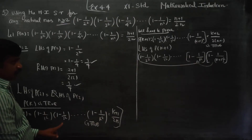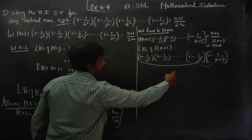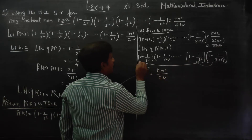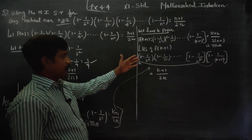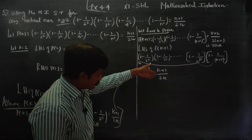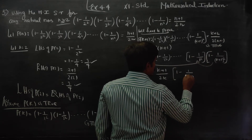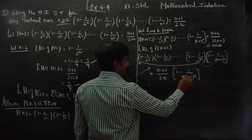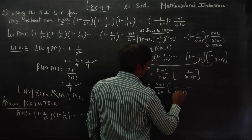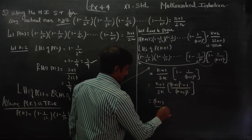We take 1 minus 1 by 2 square, 1 minus 1 by 3 square, dot dot dot, 1 minus 1 by k square — this part equals k plus 1 by 2k by the inductive hypothesis. Then multiply by 1 minus 1 by k plus 1 whole square. Cross multiplying gives k plus 1 whole square minus 1, divided by k plus 1 whole square, times k plus 1 by 2k.